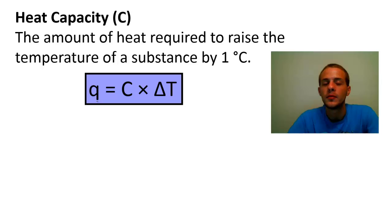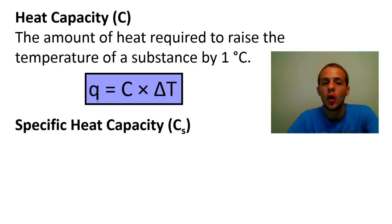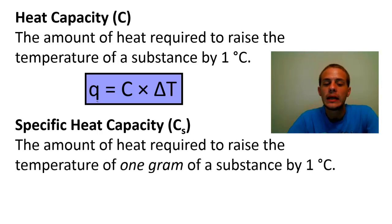Now if we wanted to use a type of heat capacity that was an intensive property, in other words it doesn't depend on how much matter you have, then we would have to use another type of heat capacity that we call the specific heat capacity, which is denoted by C subscript s. And oftentimes it's called just specific heat for short. And the specific heat of a substance is defined as the amount of heat that's required to raise the temperature of one gram of a substance by one degree Celsius.